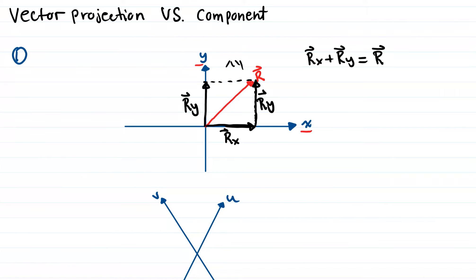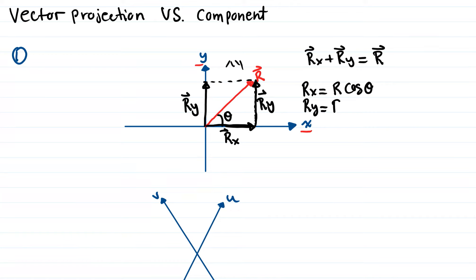So these two vectors rx and ry are both vector projections and vector components. To find rx we use r cosine theta, where theta is the angle between the vector and the x axis. To find ry we use r times sine theta. Now let's go to the second example.